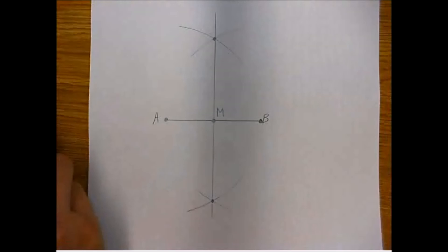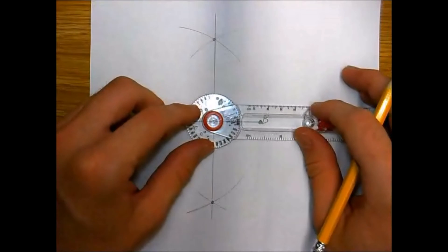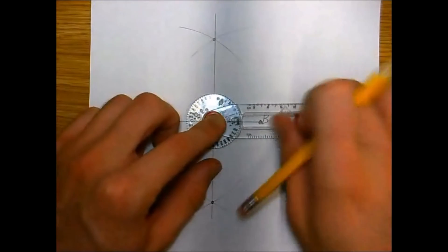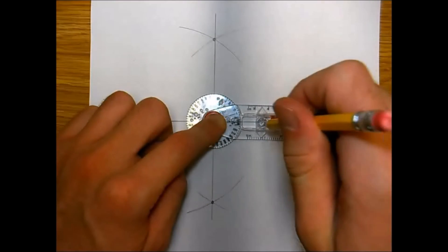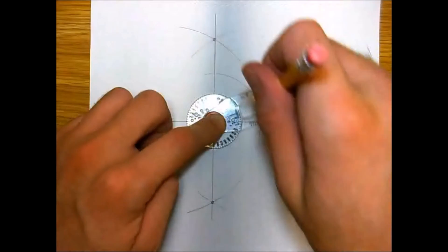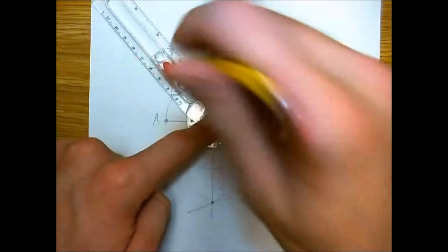Now for the next part of the construction we're using the concept that a square has congruent diagonals and the diagonals are 90 degrees. So we're going to set the compass on M and measure from M to point B or A and we're going to draw a circle, fix that point M and complete it all the way around.